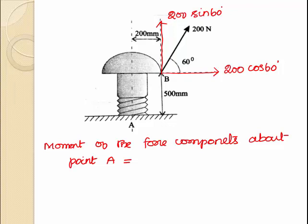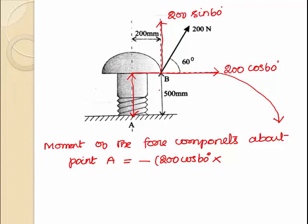First, consider the force component acting along the horizontal direction, that is 200 cos 60. About point A, this 200 cos 60 force component is acting in the clockwise direction. So the moment due to this force component is minus 200 cos 60, multiplied by the distance between this force component and point A, which is 500 mm, that is 0.5 meter.